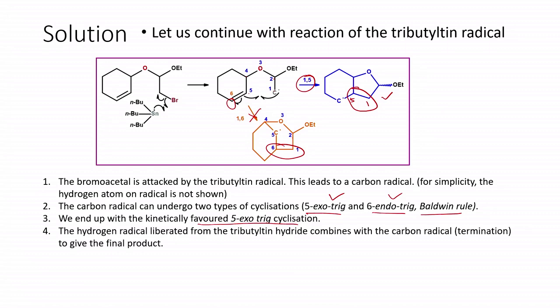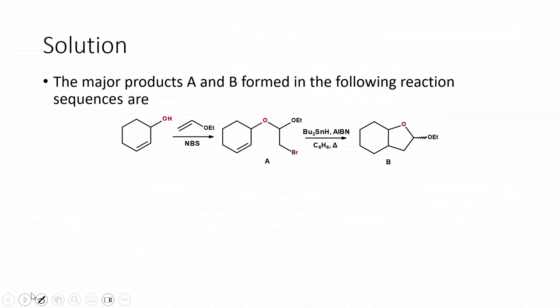The carbon radical resulting from 5-exo-trig cyclization reacts with a hydrogen radical liberated from tributyltin hydride in the termination step, giving the bromoacetal as product B. So in summary: the first step (NBS electrophilic bromination with ethyl vinyl ether) gives intermediate A, and the second step (radical cyclization with Bu₃SnH/AIBN) gives the cyclic product B via a radical mechanism.